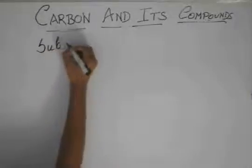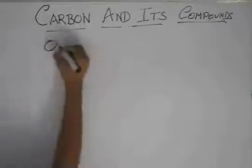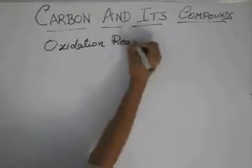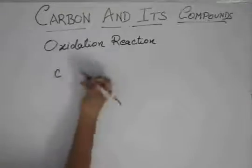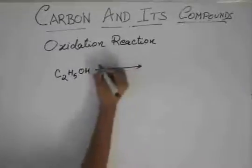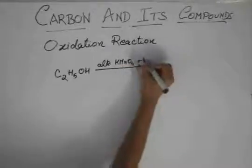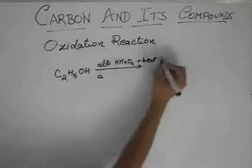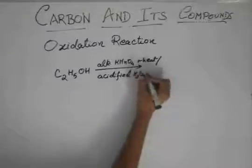We were talking about oxidation reaction, where an alcohol, suppose C2H5OH, when treated with alkaline KMnO4, that is potassium permanganate, plus heat, or acidified K2Cr2O7.